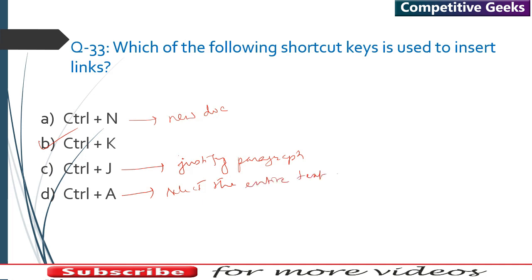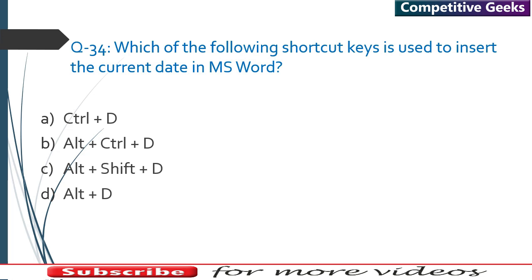Question 34: Which shortcut key is used to insert the current date in MS Word? The answer is Alt+Shift+D. To insert the current time, use Alt+Shift+T — where D is for date and T is for time.